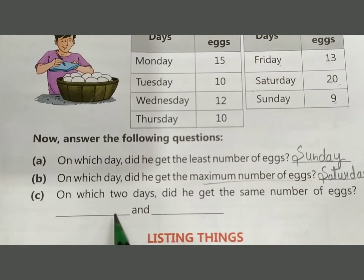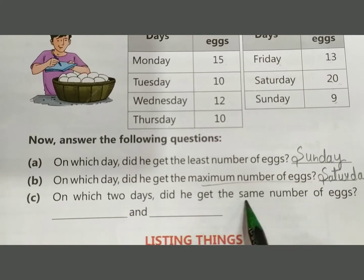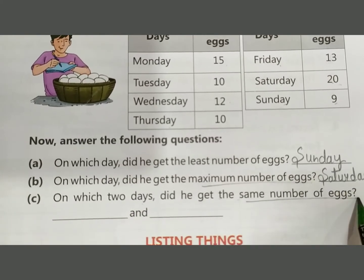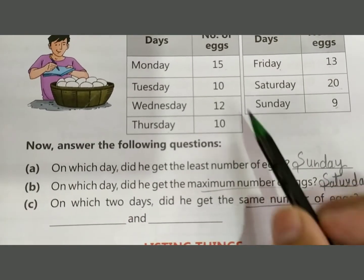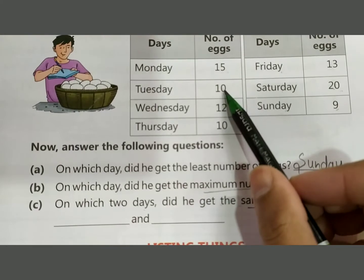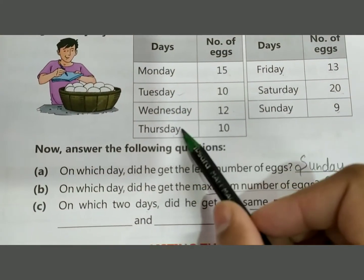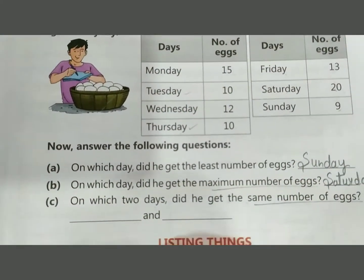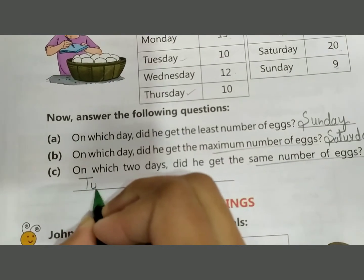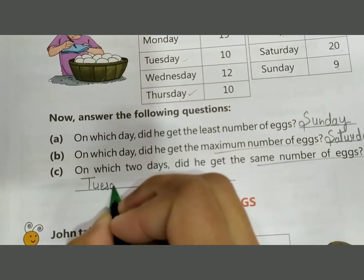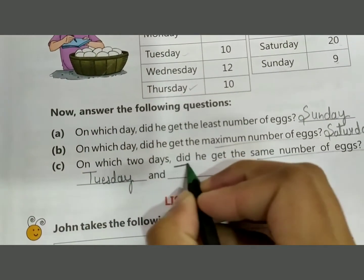On which two days did he get the same number of eggs? The same number is 10 — the days are Tuesday and Thursday. Write Tuesday and Thursday.